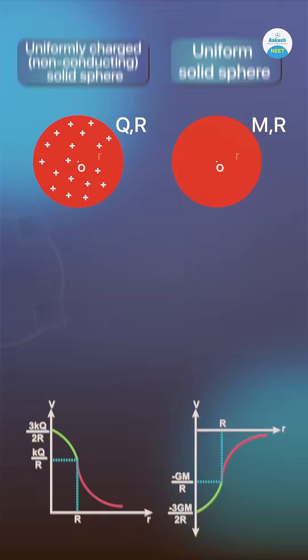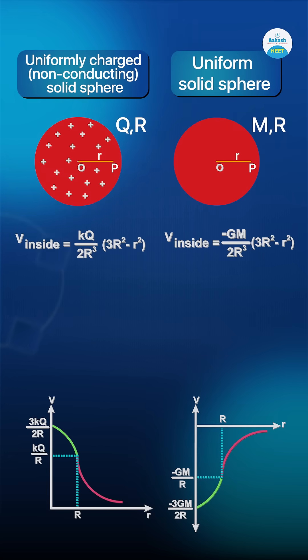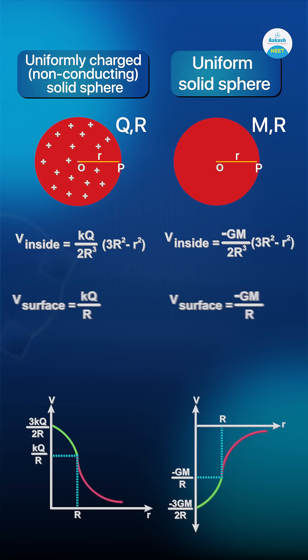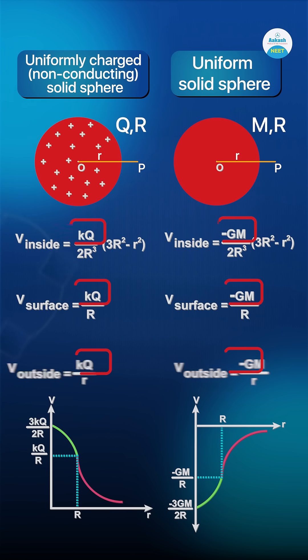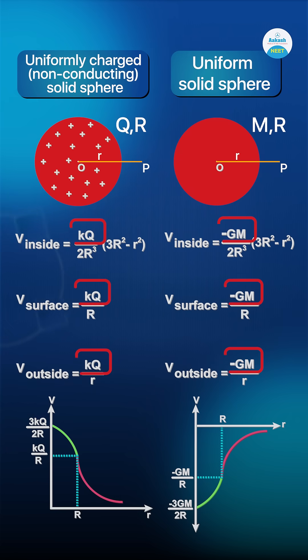Now coming back to the uniformly charged solid sphere: potential at an inside point would be KQ by 2R cube into 3R square minus small r square. Potential at a point on the surface is KQ by R, while potential at a point outside would be KQ by r. On the gravitational front, my dear friends, once again the expressions are very similar. Thank you.